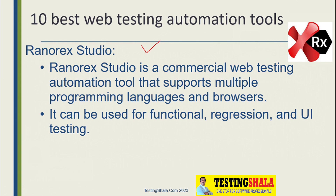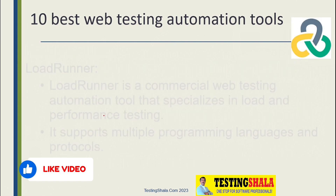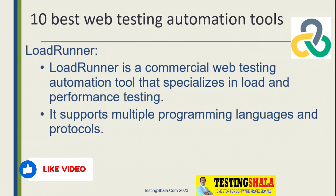The next type of automation tool is Ranorex Studio. Ranorex Studio is a commercial web testing automation tool. It supports multiple programming languages and multiple browsers. Using this tool, we can perform regression as well as UI testing automation.